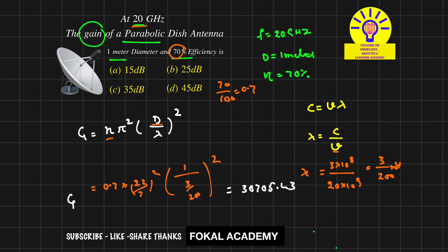So how can you convert to decibels? The gain in decibels is 10 into log base 10 of gain. Now substitute gain here: 10 into log of 30,700.543 base 10. So that's equal to 45 dB. So by using calculator, we will get 45 dB.